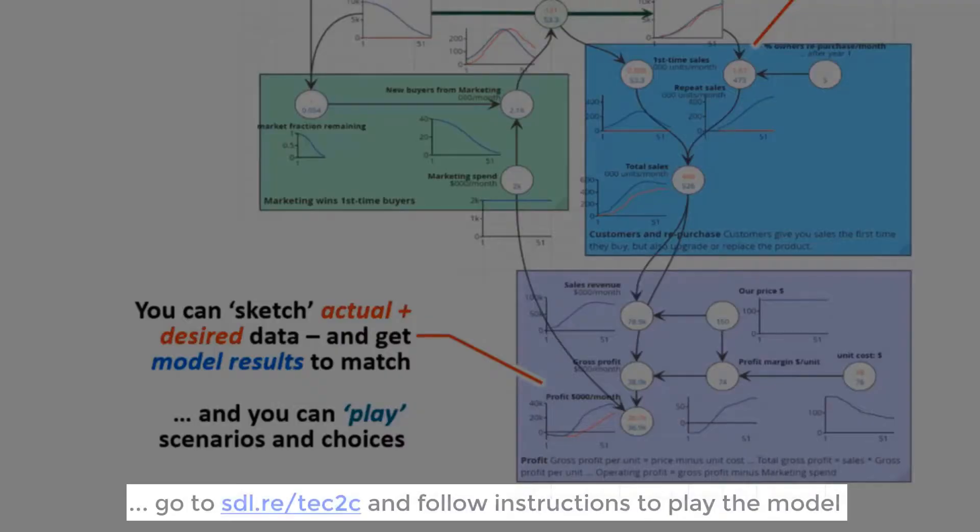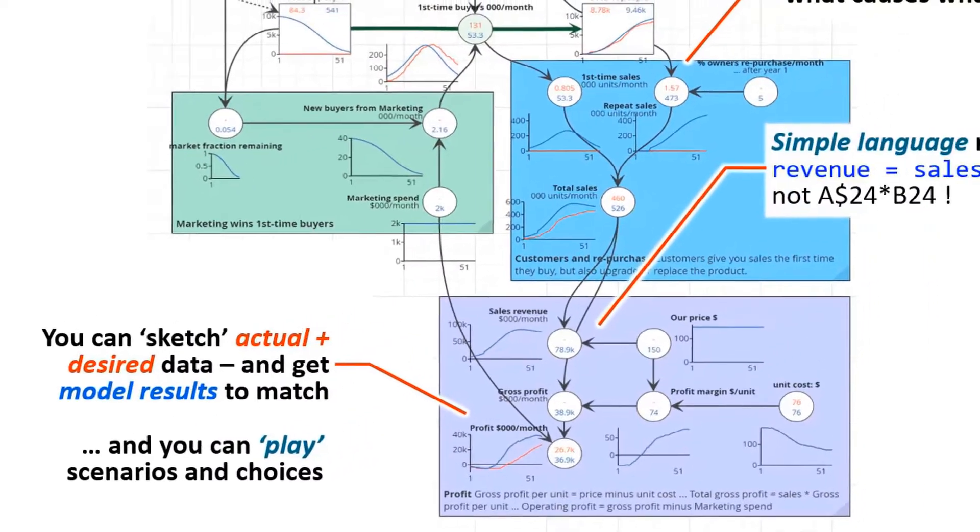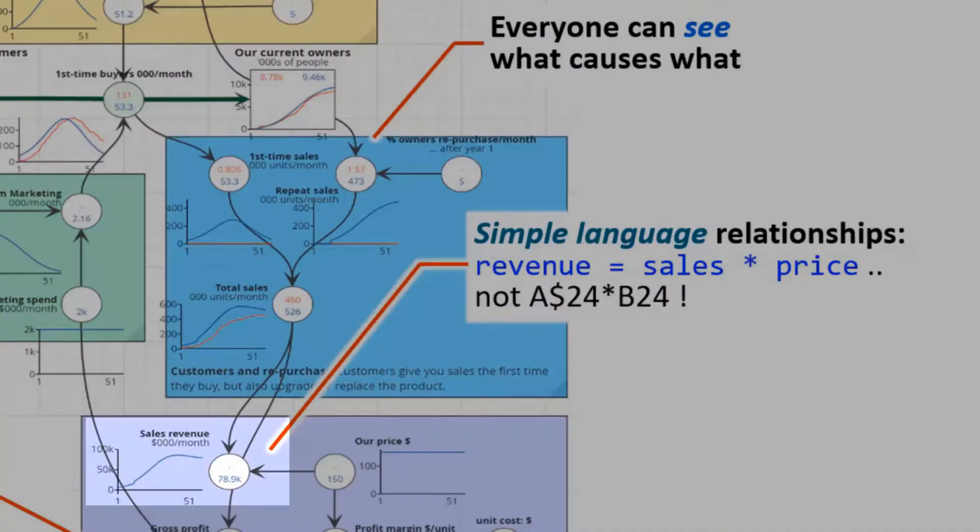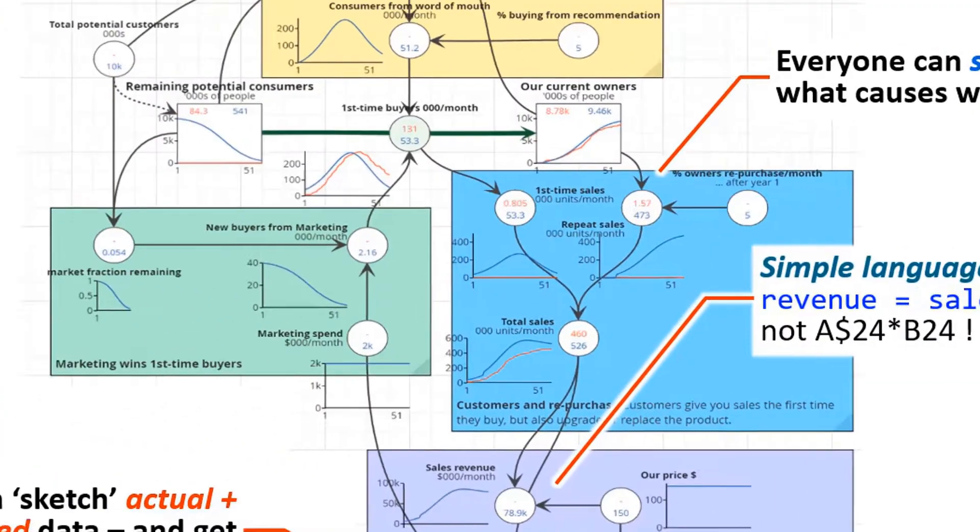Furthermore, you can play out scenarios and choices. If you go to the model and open it, you'll be able to play scenarios with different choices of marketing expenditure and price assumptions. Inside each of those items there's a very simple language formula—the actual formula is revenue equals sales multiplied by price. It's not something obscure like dollar 24 multiplied by B24, so it's really easy to see what the relationships are.